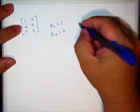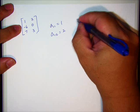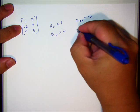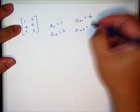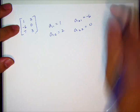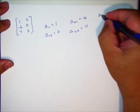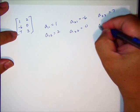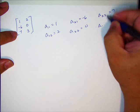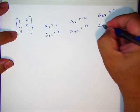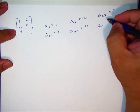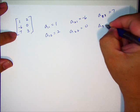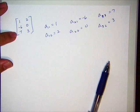And here we have a21 is negative 6, a22 is 0, and a23 has a value of 7. A21... a, wow, I really screwed that up. This is a31, and this is a32 is 3.